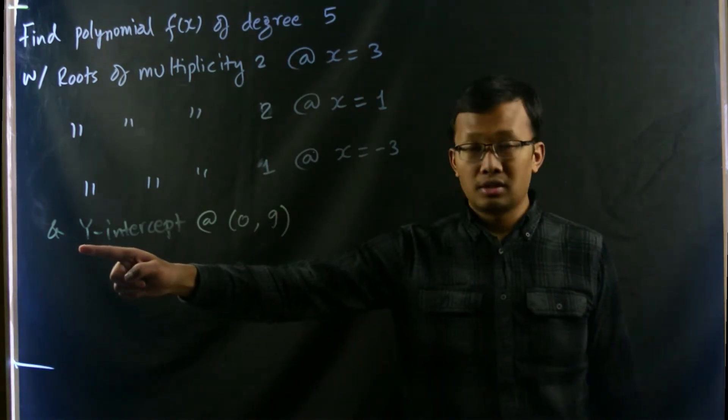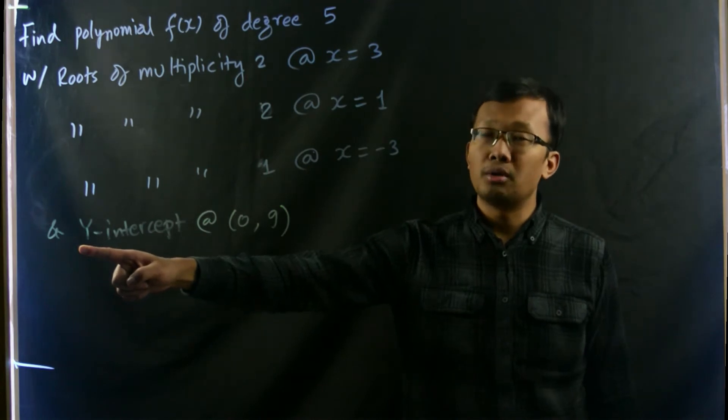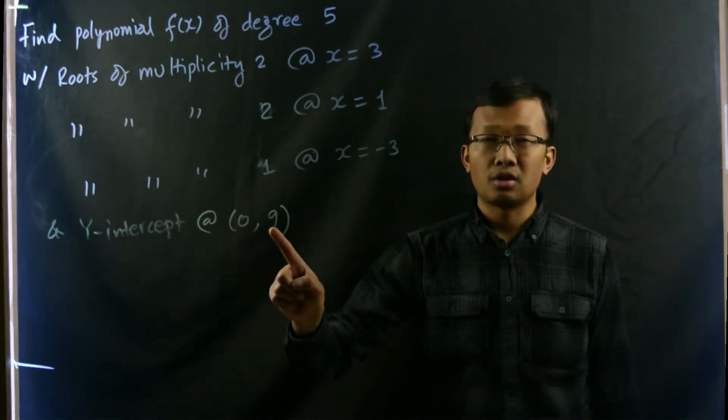And the graph of this polynomial function should pass through y-intercept (0,9).